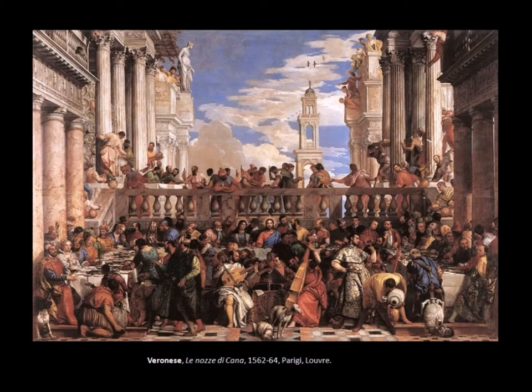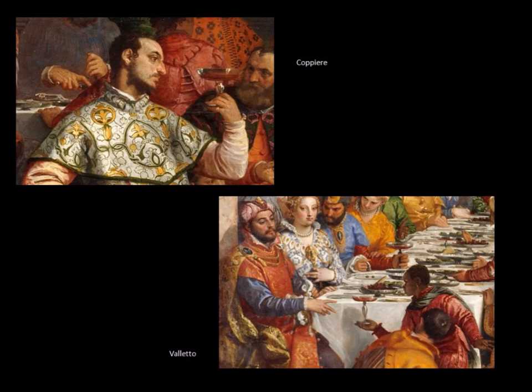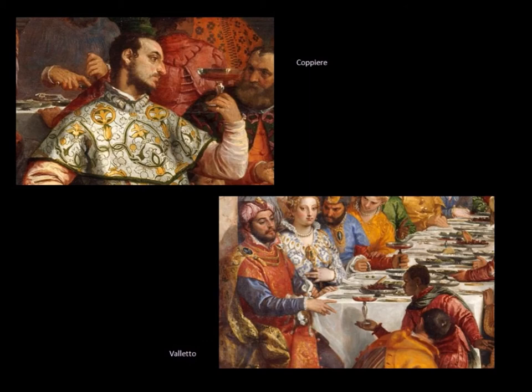Tra gli inservienti più importanti figurano lo scalco, lo spenditore, il credenziere, il cuoco, il trinciante, il mescitore, il coppiere, ai cui seguono poi servitori ordinari. Un banchetto può prevedere anche una ventina di portate. L'uso delle tre posate — cucchiaio, forchetta e coltello — è una conquista più recente.